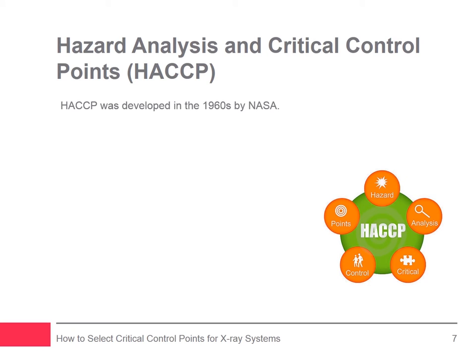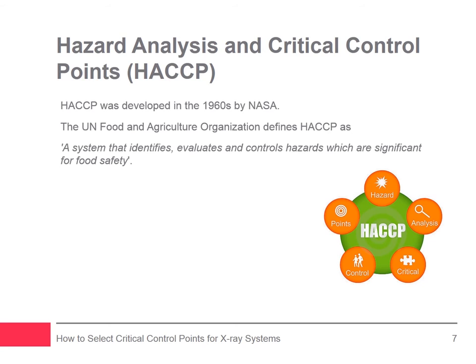Hazard Analysis and Critical Control Points was developed in the late 1960s by NASA and its partners as a way of ensuring the safety of food destined for astronauts. In 1993, the Codex Alimentarius Commission said HACCP was the most cost-effective way to ensure food safety, and it's now an international standard in the food industry. The United Nations Food and Agriculture Organization defines HACCP as a system that identifies, evaluates, and controls hazards which are significant for food safety. It's a complete approach to safety, directed as much towards keeping contaminants out of the production process as to catching them before products leave the factory.